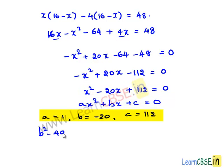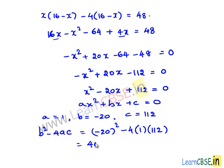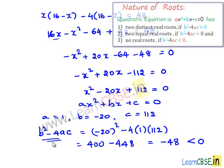Let us find the discriminant b² minus 4ac, which is nothing but (-20)² minus 4 times 1 multiplied by 112, which is 400 minus 448, equals minus 48, which is less than 0. So the discriminant b² minus 4ac is less than 0.